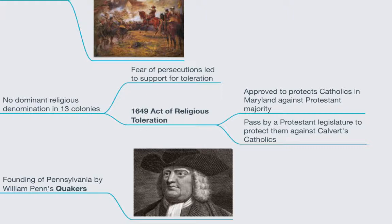Thus one step closer to actual colonial religious toleration. Maryland's famous 1649 Act of Religious Toleration was approved by Calvert's son Cecilius — that's Lord Baltimore's son — to protect Catholics against a Protestant majority. But it was passed by a Protestant legislature to protect them against Calvert's Catholics. Finally, toleration was partially the result of the founding of a new colony in the 1640s, Pennsylvania, by a new and more tolerant denomination, William Penn's Quakers.